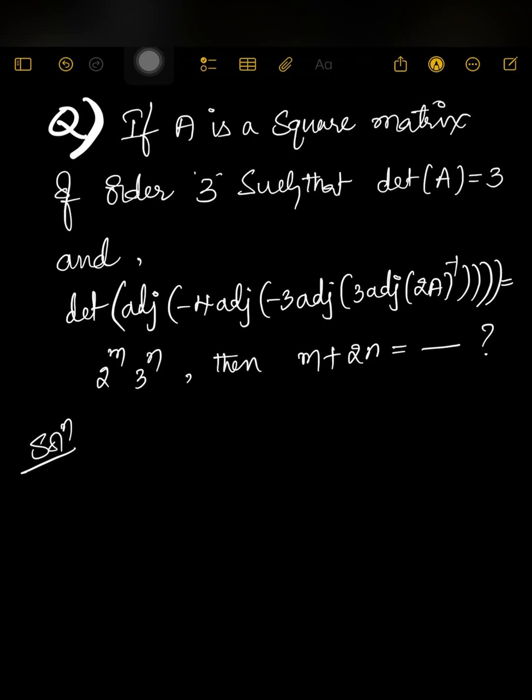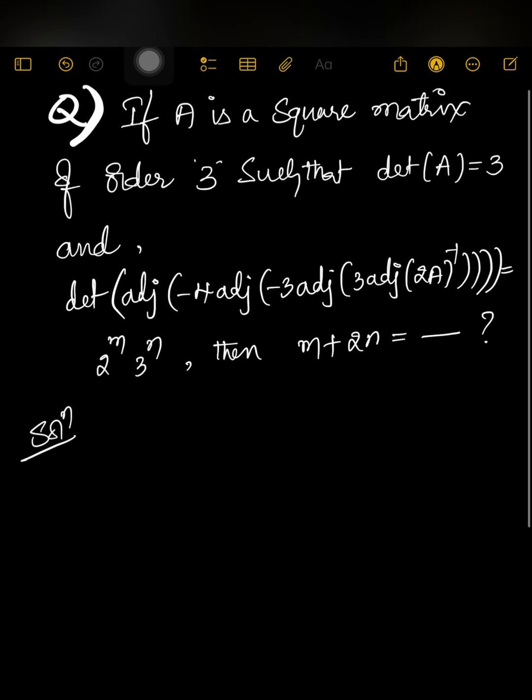Hi students, today we will discuss a problem on determinants. The question is: if A is a square matrix of order 3 such that det(A) = 3, and the given expression det(adj(-4·adj(-3·adj(3·adj(2A)^(-1))))) equals 2^m · 3^n, then m plus 2n equals what? We have to solve this using two concepts.